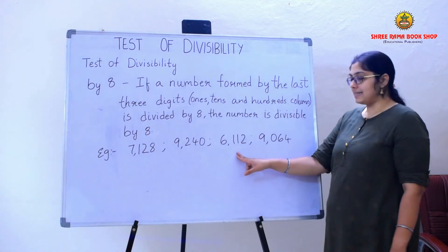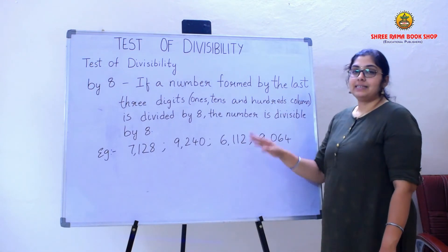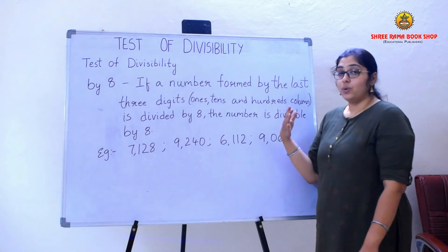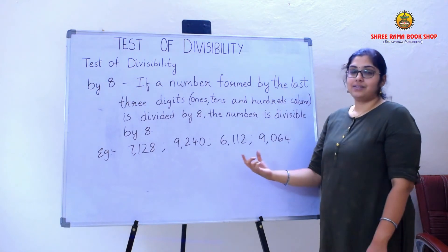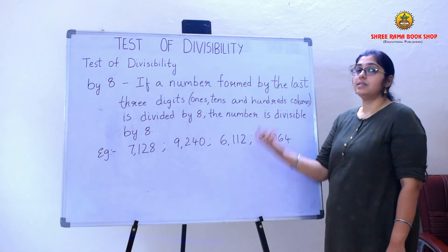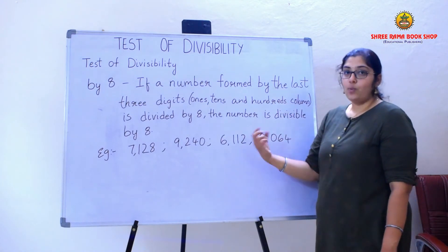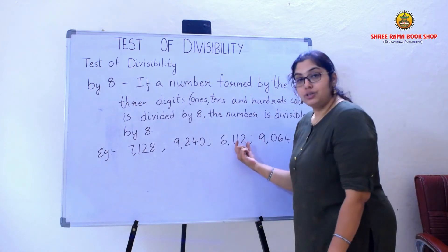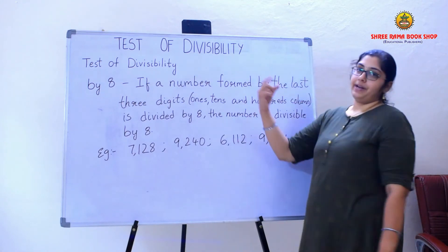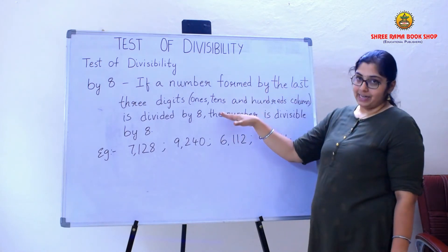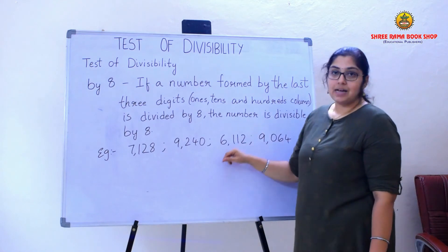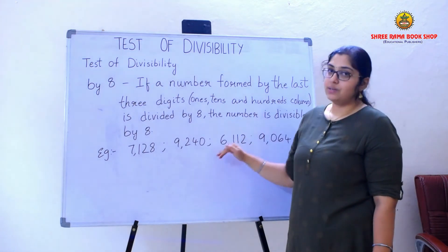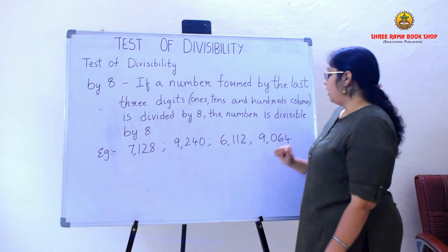Moving on to the next example, it is 6112. In the last three digits, that is 112. I can say that 112 is divided by 8, so the whole number 6112 is also divisible by 8.